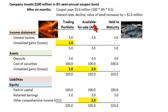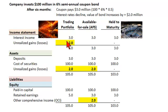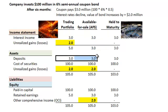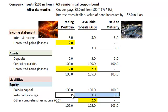Now the three classifications are here. Right in the middle is the default assumption — the instrument is available for sale. On the left, a bond classified under the trading portfolio, and on the right, a bond held to maturity. The $3 million coupon gets the same treatment under all three classifications: interest income of $3 million is recognized on the income statement, growing assets and equity as part of retained earnings.